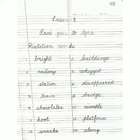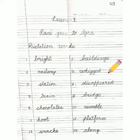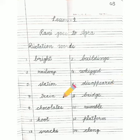Your first dictation word is bright. Next: buildings, railway, whizzed, station, disappeared, train, bridge.